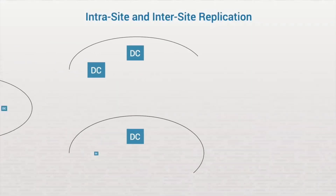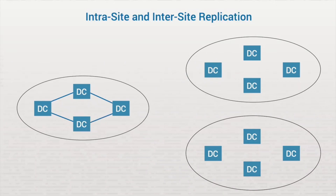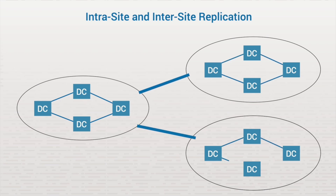Active Directory sites are used to control replication traffic. A domain controller in a site is immediately replicated to another domain controller within the site. That DC replicates the update to the next DC, and so on, until all the DCs in the site are updated. At a scheduled interval, a designated DC in the site, called a bridgehead server, replicates the updates to a bridgehead server in each of the other sites.